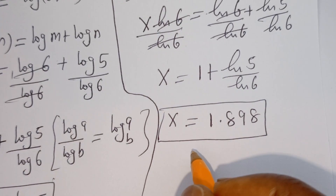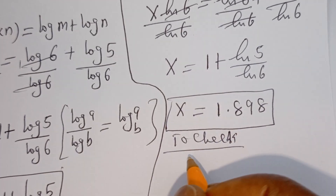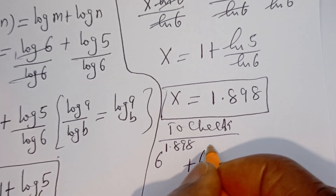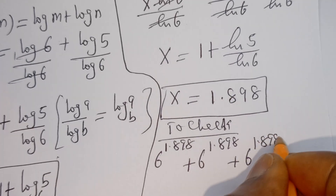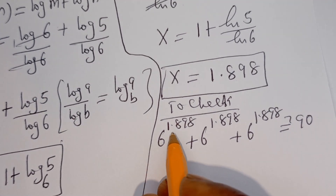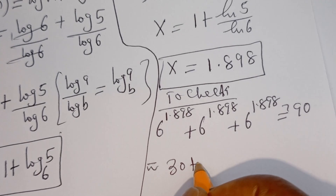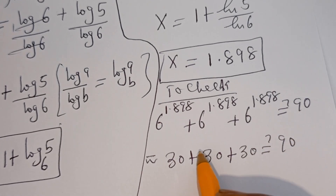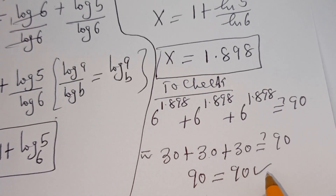Let's check to confirm this answer. We have 6 to the power of 1.898 plus 6 to the power of 1.898 plus 6 to the power of 1.898, which must equal 90. Since 6 to the power of 1.898 is approximately 30, we get 30 plus 30 plus 30, which is 90, equal to 90. This is true. I hope you enjoyed the video.